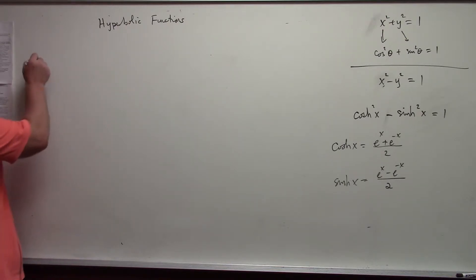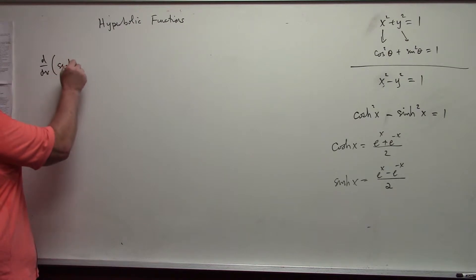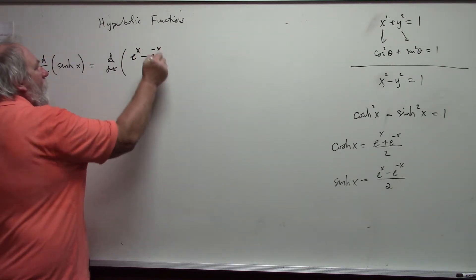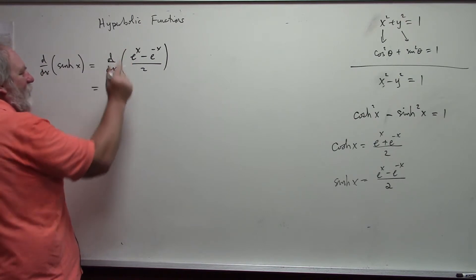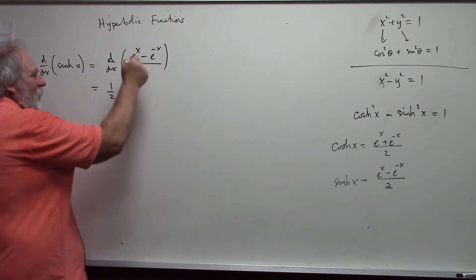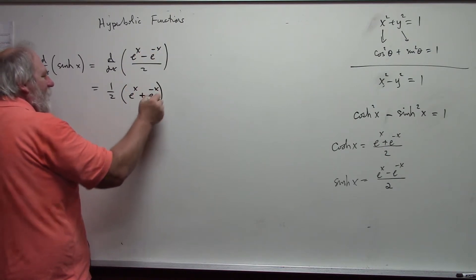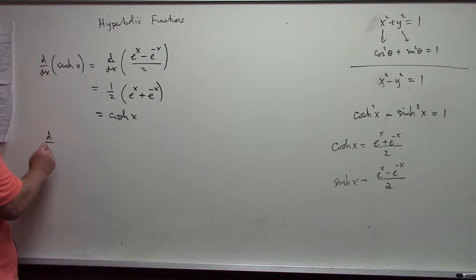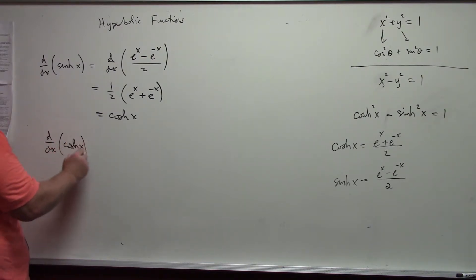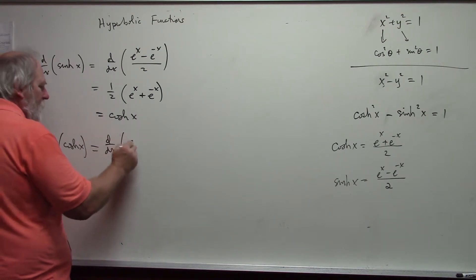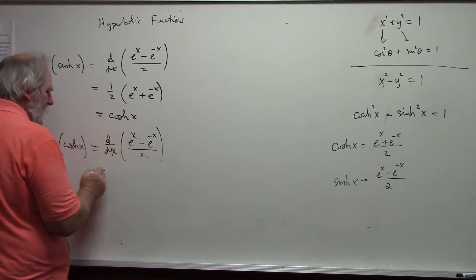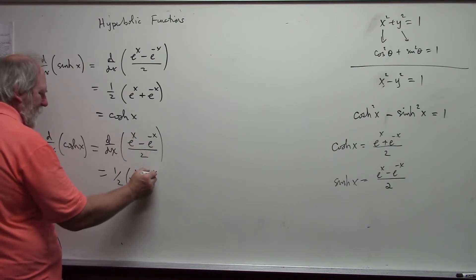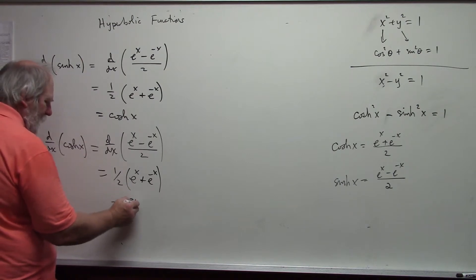In terms of derivatives, the derivative of sinh of x — using that exponential formula — becomes one half times: the derivative of e to the x is e to the x, and the derivative of negative e to the negative x becomes plus e to the negative x. Hopefully you recognize that this is cosh of x.